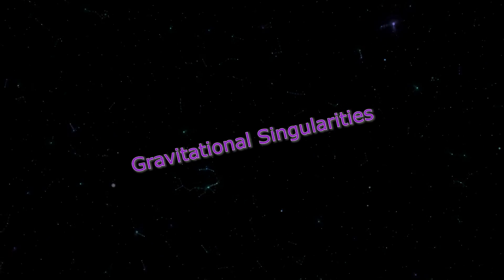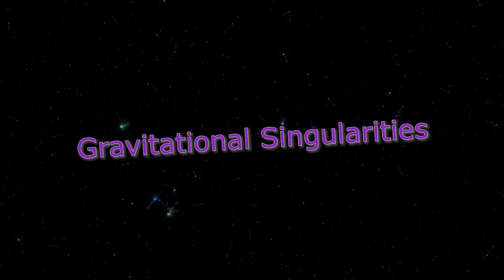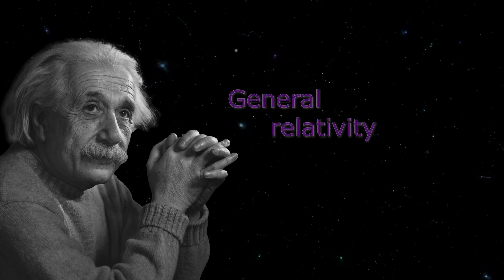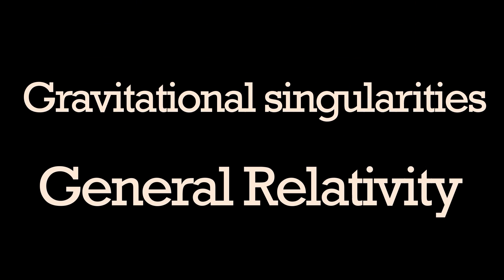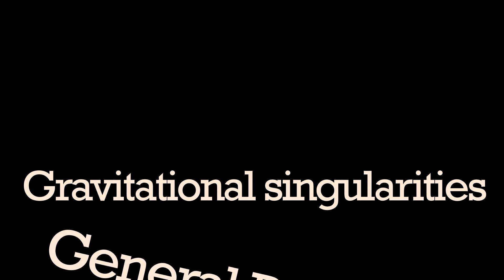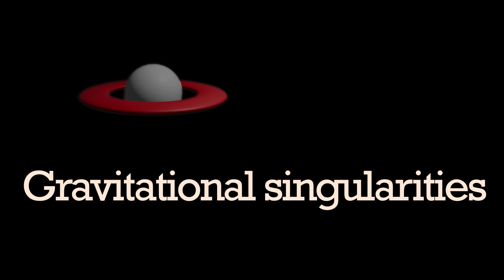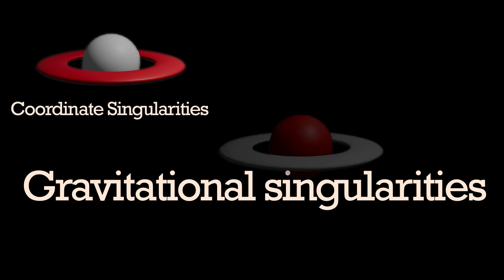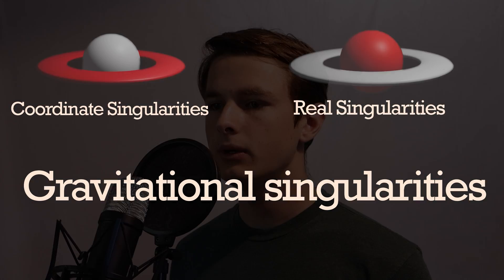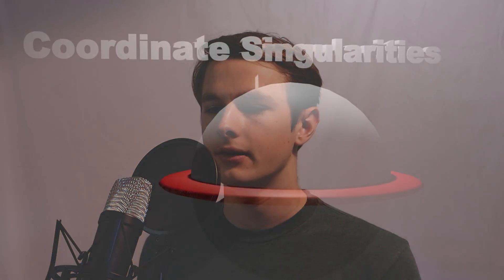Gravitational singularities were first theorized by Einstein's general relativity, which is our best theory on how gravity works. In general relativity, there are two types of singularities: coordinate singularities and true singularities. A coordinate singularity we believe to have figured out, but it's still important for understanding true singularities.